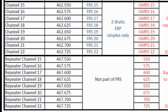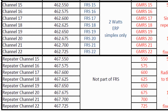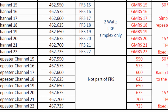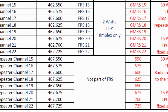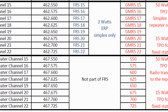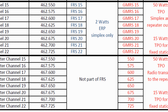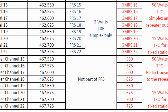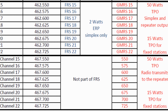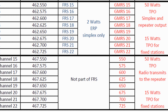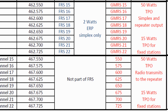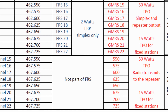The 462 to 467 is a 5 megahertz split, which makes it convenient for operating repeaters without having to have a large duplexer. When using repeaters, we often refer to them with the digits after the decimal point, so the 625 repeater would be the repeater equivalent to channel 18.